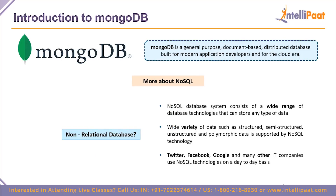MongoDB is a general-purpose, document-based, distributed database built for modern developers. It allows you to move entire databases to the cloud and scale your business. NoSQL databases contain a wide variety of technologies that can store any type of data — structured data like tables, semi-structured data, unstructured data like images, videos, and music, and even polymorphic data. Companies that use MongoDB include Twitter, Facebook, and Google, along with multiple other Fortune 500 companies.